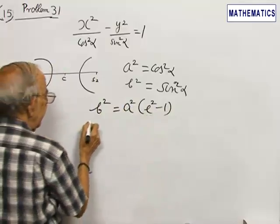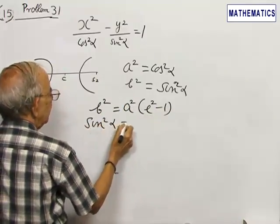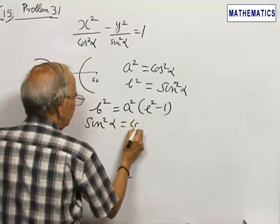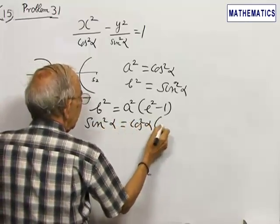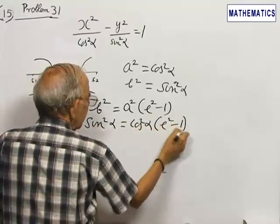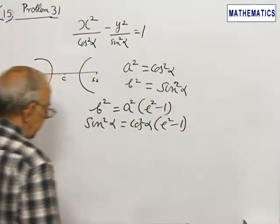That means sin squared alpha equal to cos squared alpha into e squared minus 1.